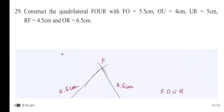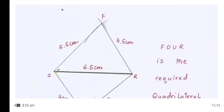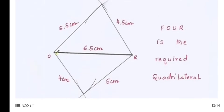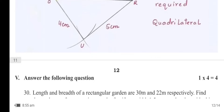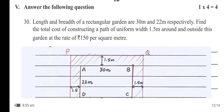Construct the quadrilateral FOUR with FO = 5.5 cm, OU = 4.5 cm, UR = 4.5 cm, OF = 4.5 cm, and OR = 6.5 cm. You can see the diagram; FOUR is the required quadrilateral.